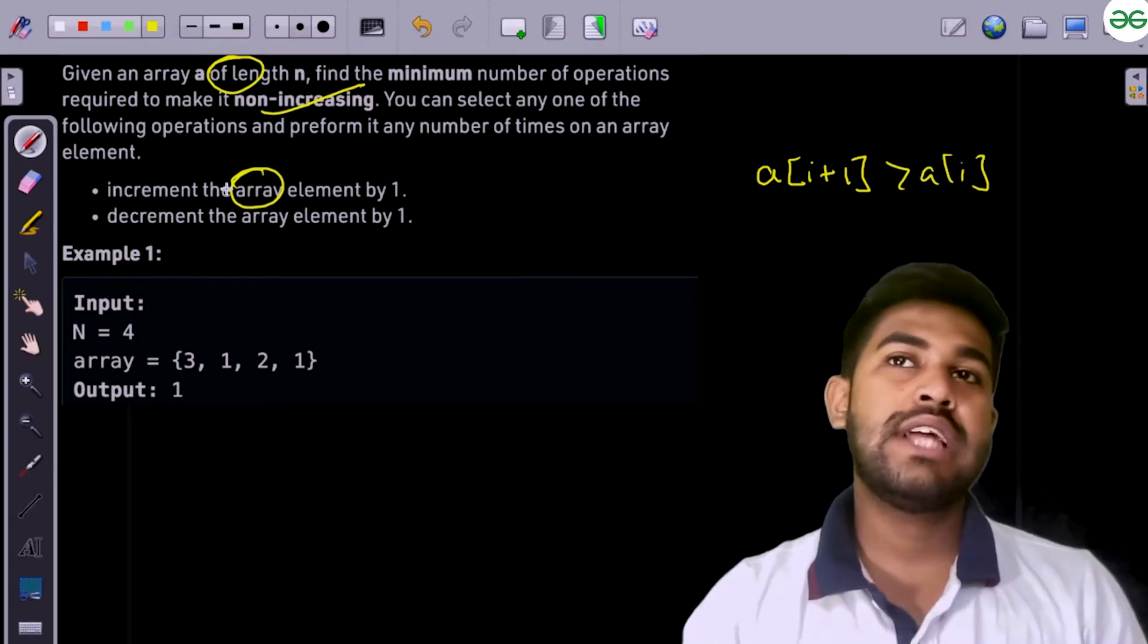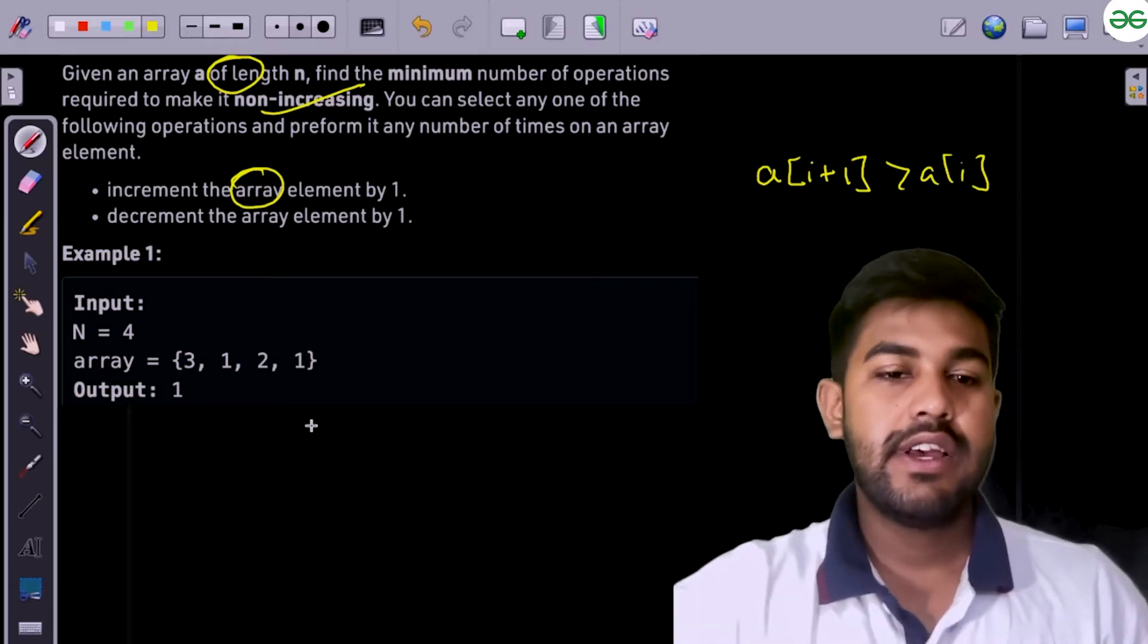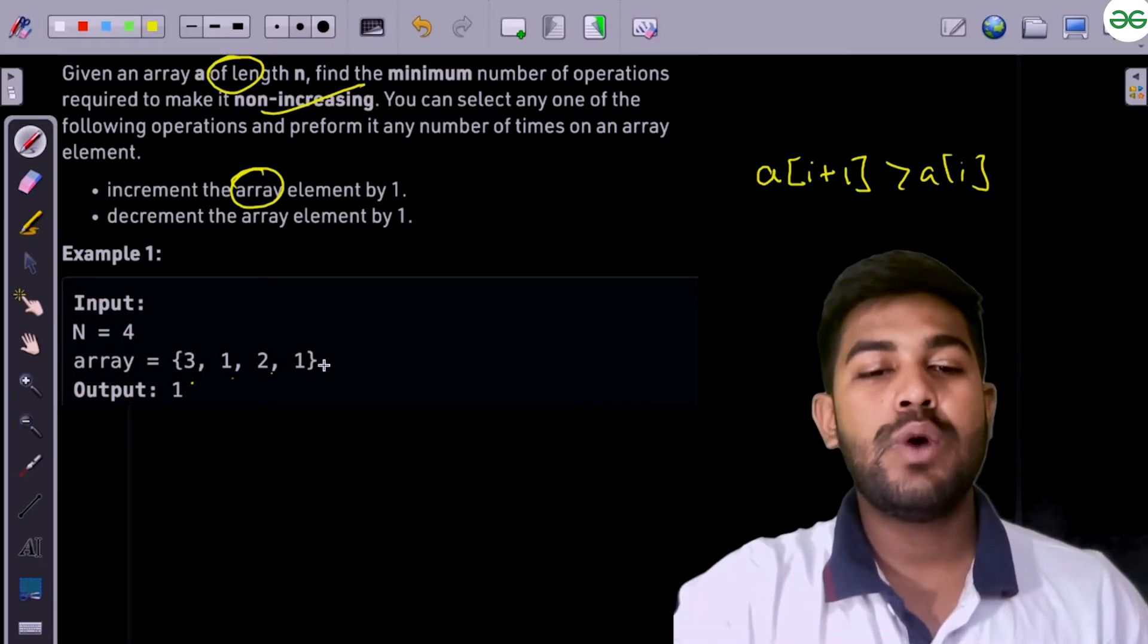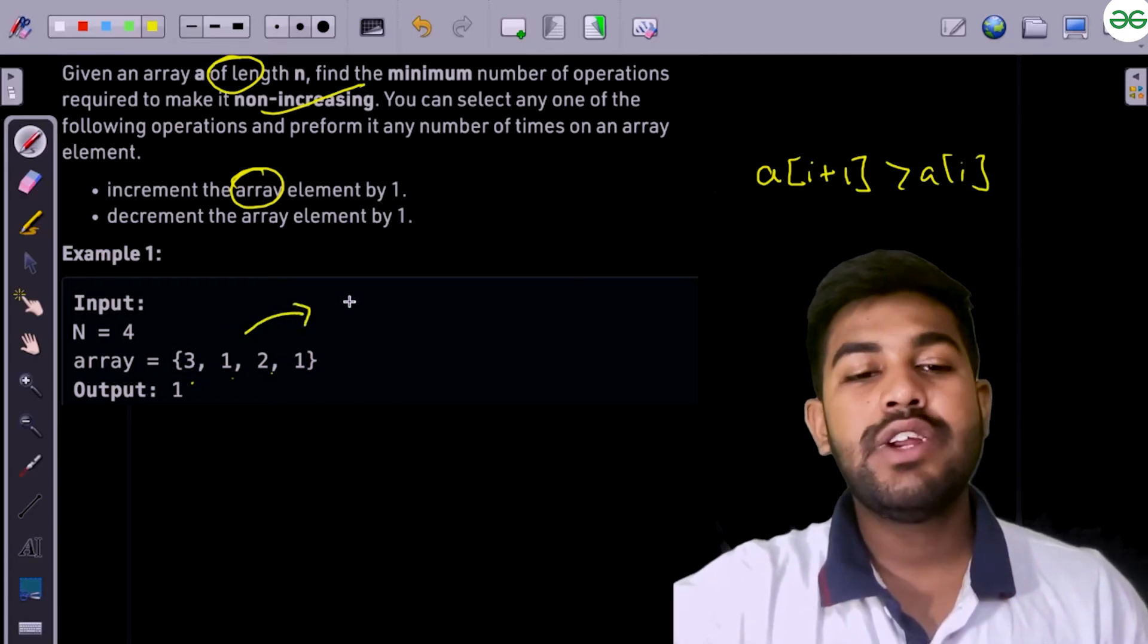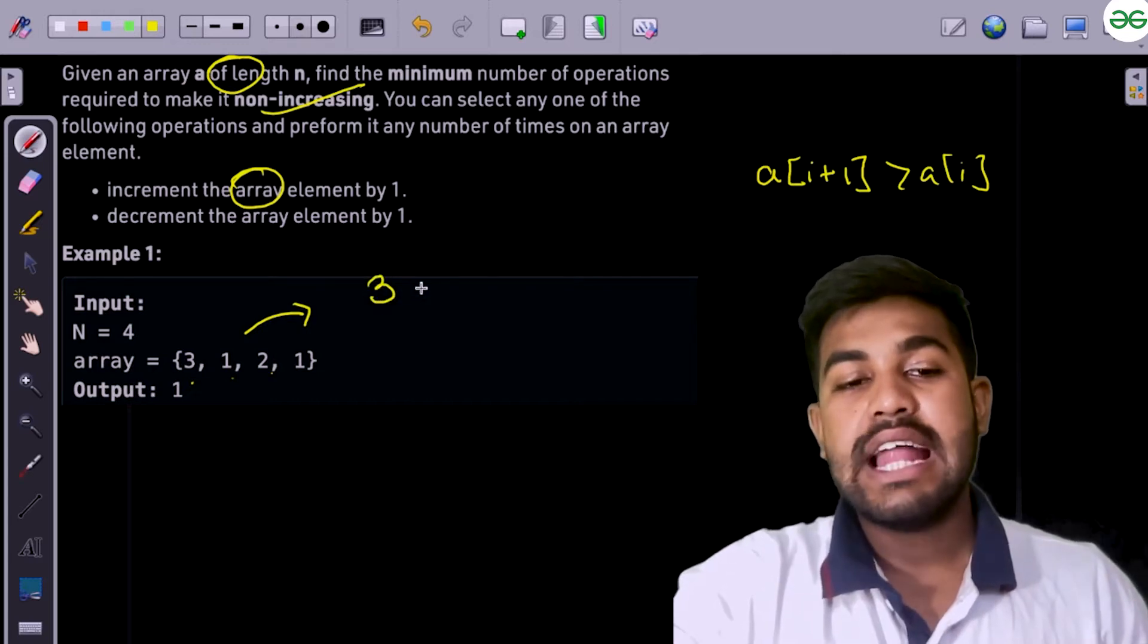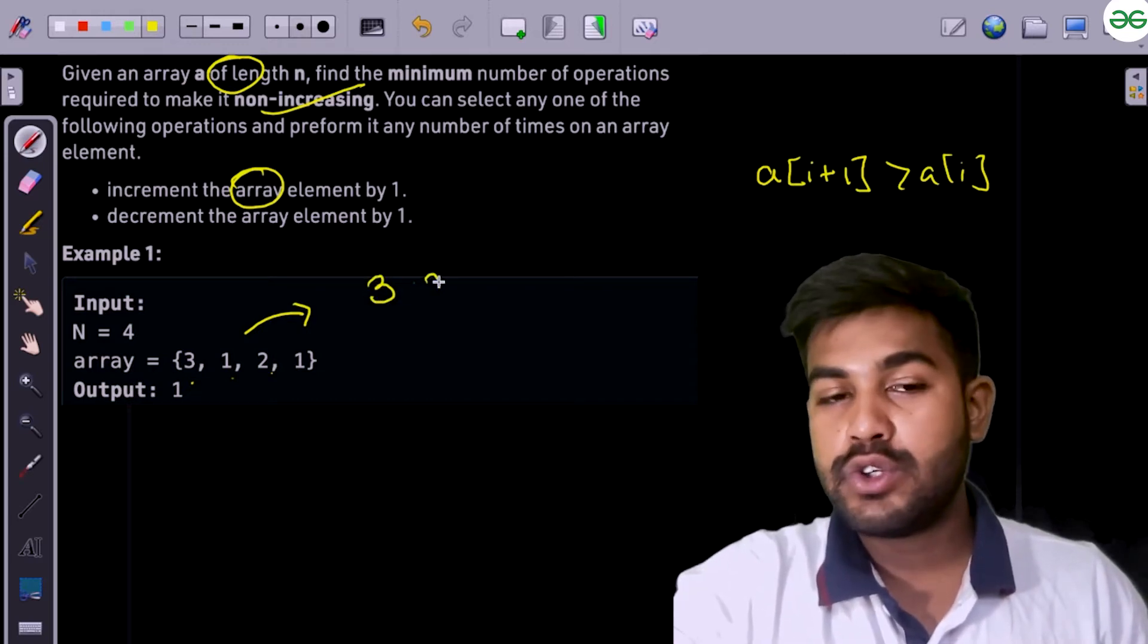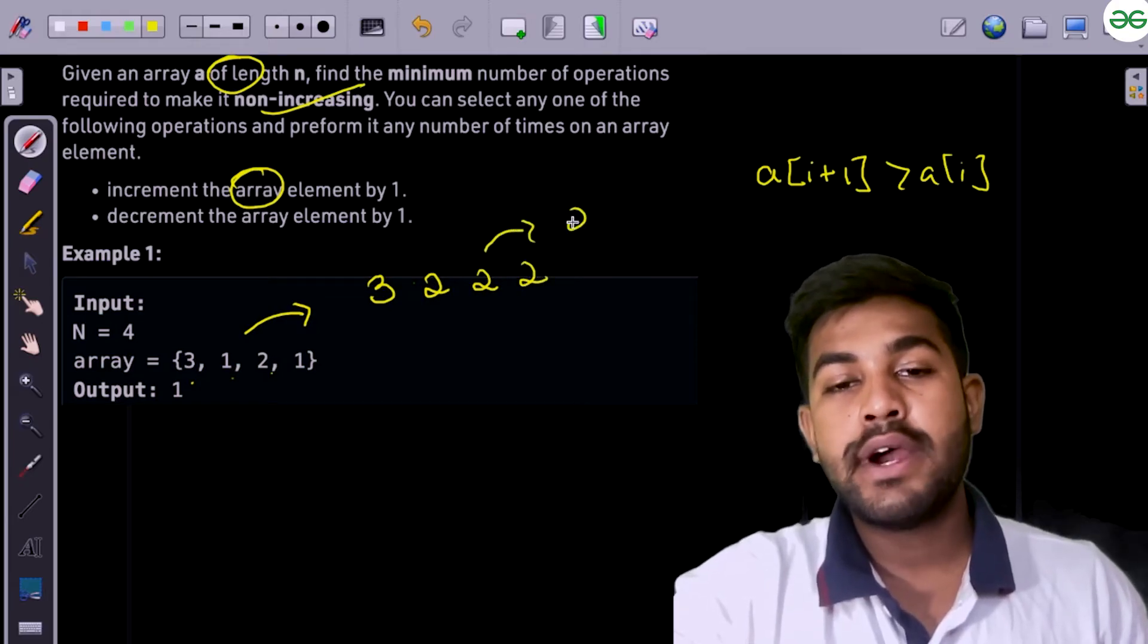So both have equal weightage, both operations are considered the same itself. We have 3, 1, 2 and 1. So the possible scenario is we try to convert everything to 2. So 3 and then this 1 would be converted to 2, then 2 would remain and this would remain. So basically we required 2 operations.